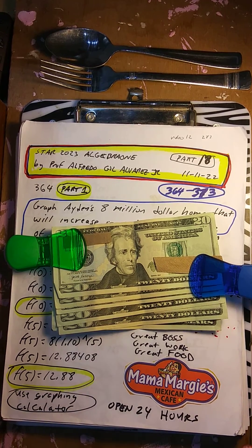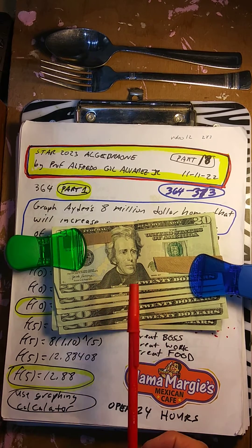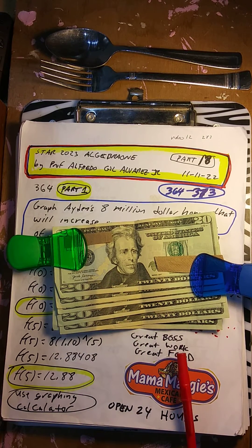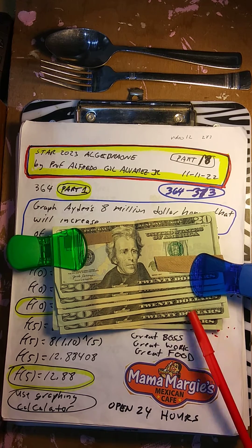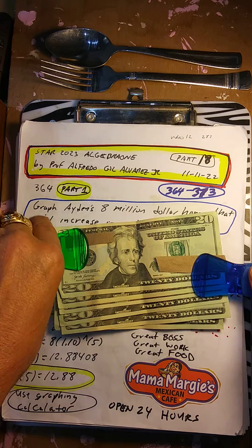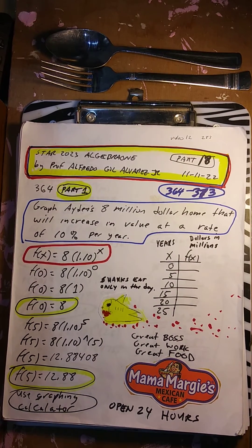Right now, if you need college money, money for college — university, all Margie's, great boss, great work, great food, open 24 hours, looking for workers, more hours, more money. But let's say you don't need that right now. Let's get out of here. All right, so let's go and start right here.